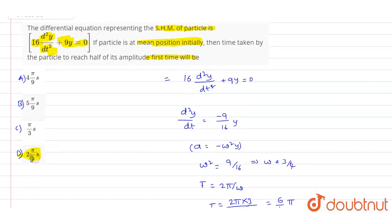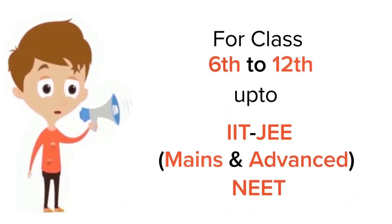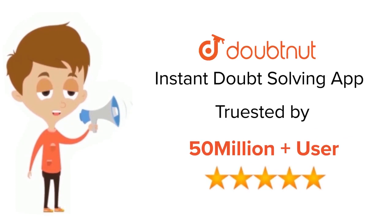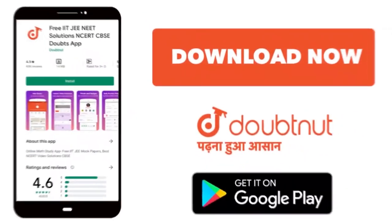So out of these 4 options, if you observe we have option D as 2π/9, which is the correct answer for this question. Thank you. For class 6 to 12, IIT-JEE and NEET level, trusted by more than 5 crore students, download Doubtnet app today.